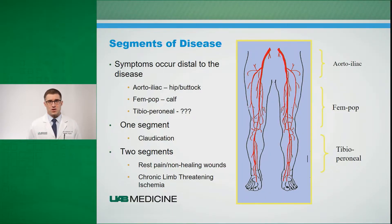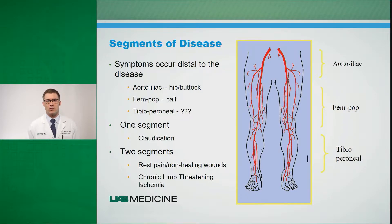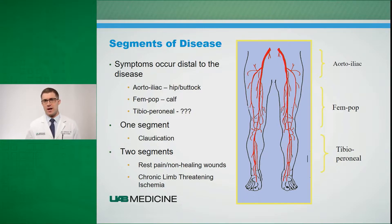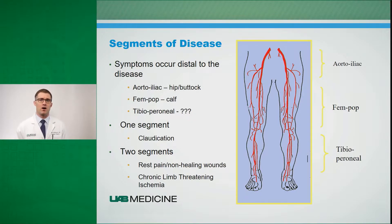When you see a physician about your disease, they'll ask you questions about where your pain is, which plays a huge part in determining where the majority of your disease is likely located. Patients with aortoiliac occlusive disease within the arteries of the belly will often complain of hip and buttock pain with walking. Patients with femoral popliteal disease within the arteries of the thigh will often complain of claudication or pain in the calf with ambulation.